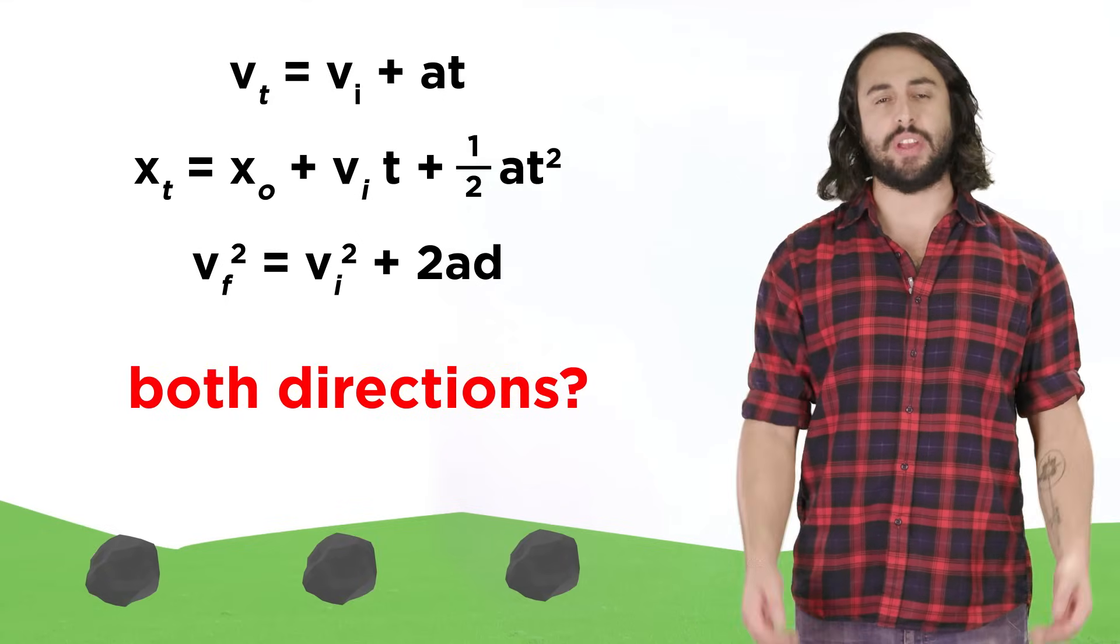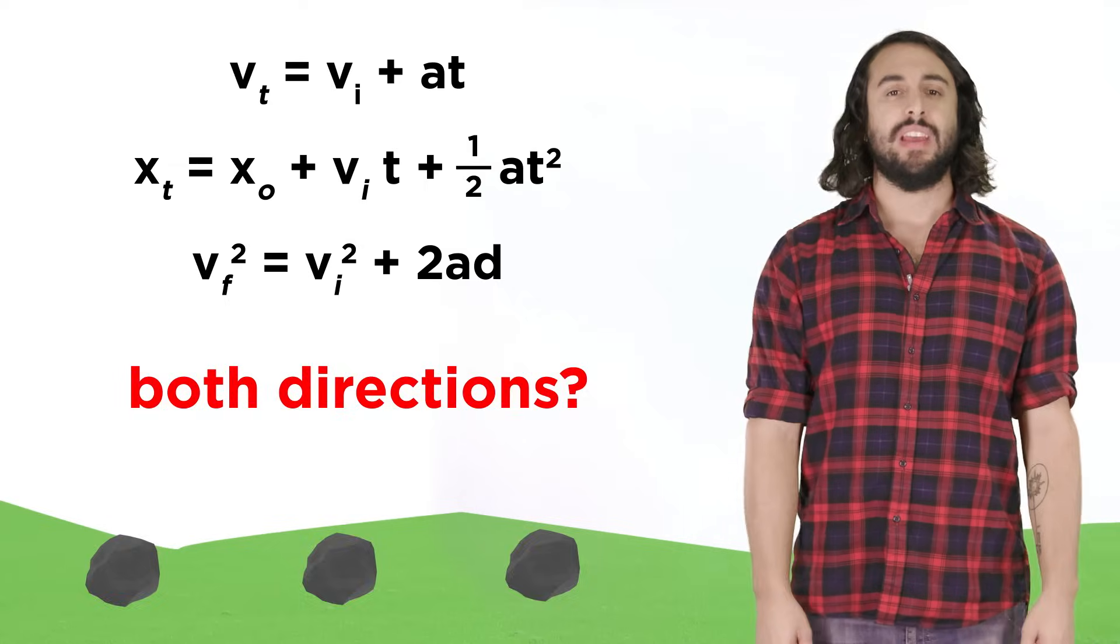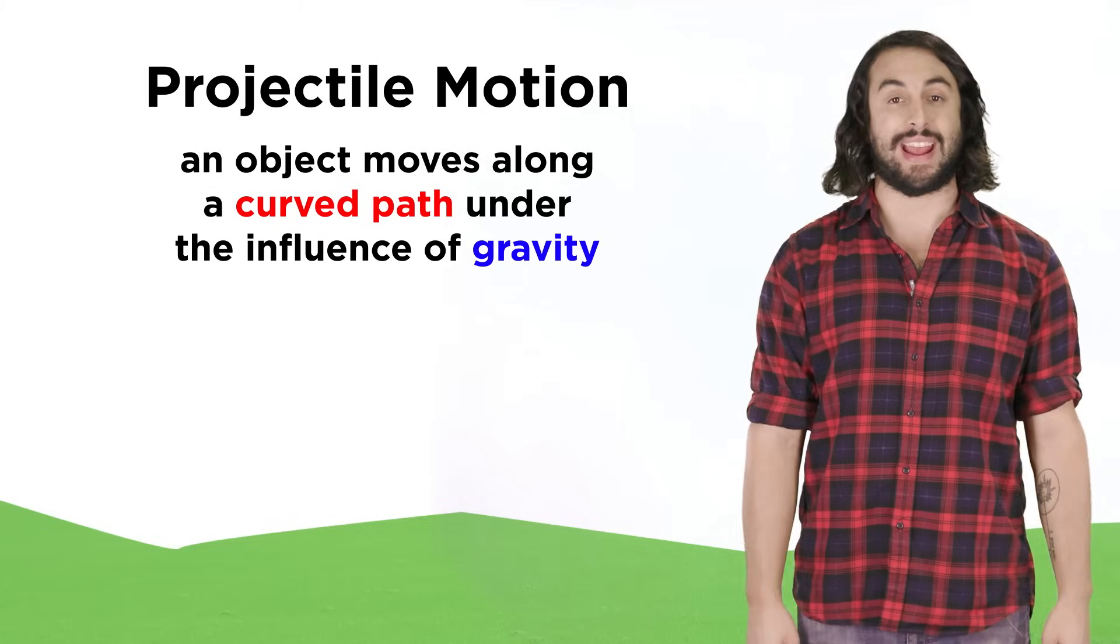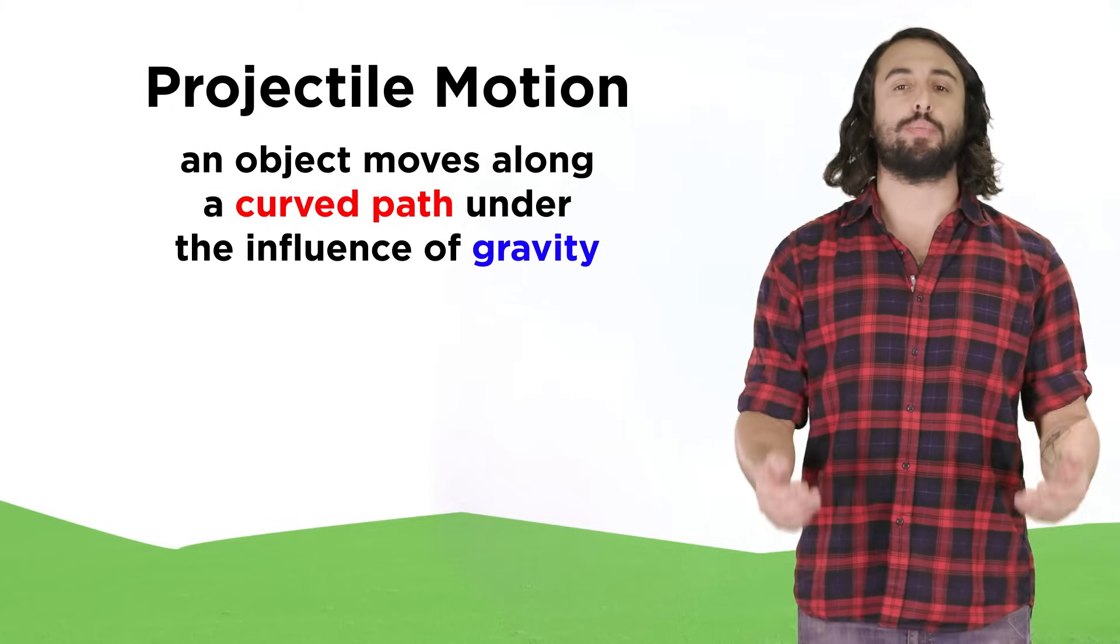But what about objects that move in both of these directions? This type of motion, if it involves an object that is thrown or launched into the air, can be referred to as projectile motion.